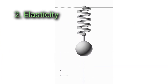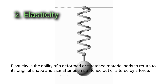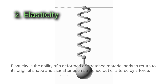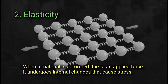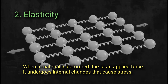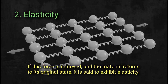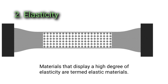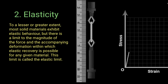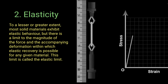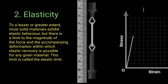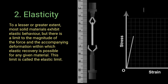2. Elasticity. Elasticity is the ability of a deformed or stretched material body to return to its original shape and size after being stretched out or altered by a force. When a material is deformed due to an applied force, it undergoes internal changes that cause stress. If this force is removed and the material returns to its original state, it is said to exhibit elasticity. Materials that display a high degree of elasticity are termed elastic materials. Most solid materials exhibit elastic behavior, but there is a limit to the magnitude of the force and the accompanying deformation with which elastic recovery is possible for any given material. This limit is called the elastic limit.